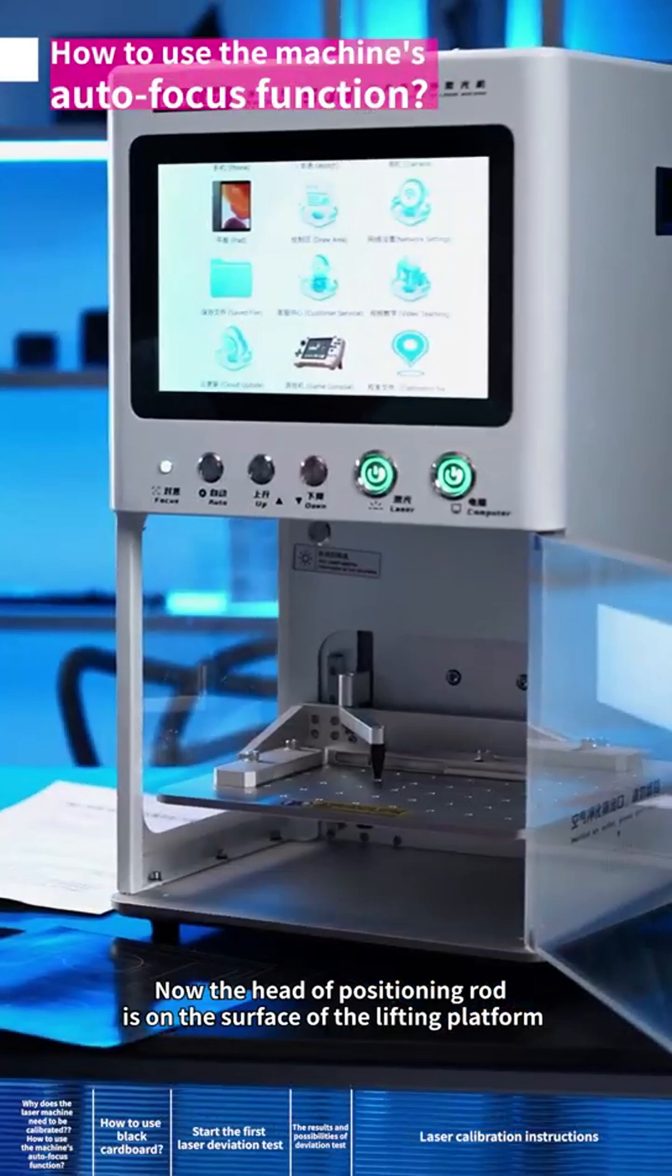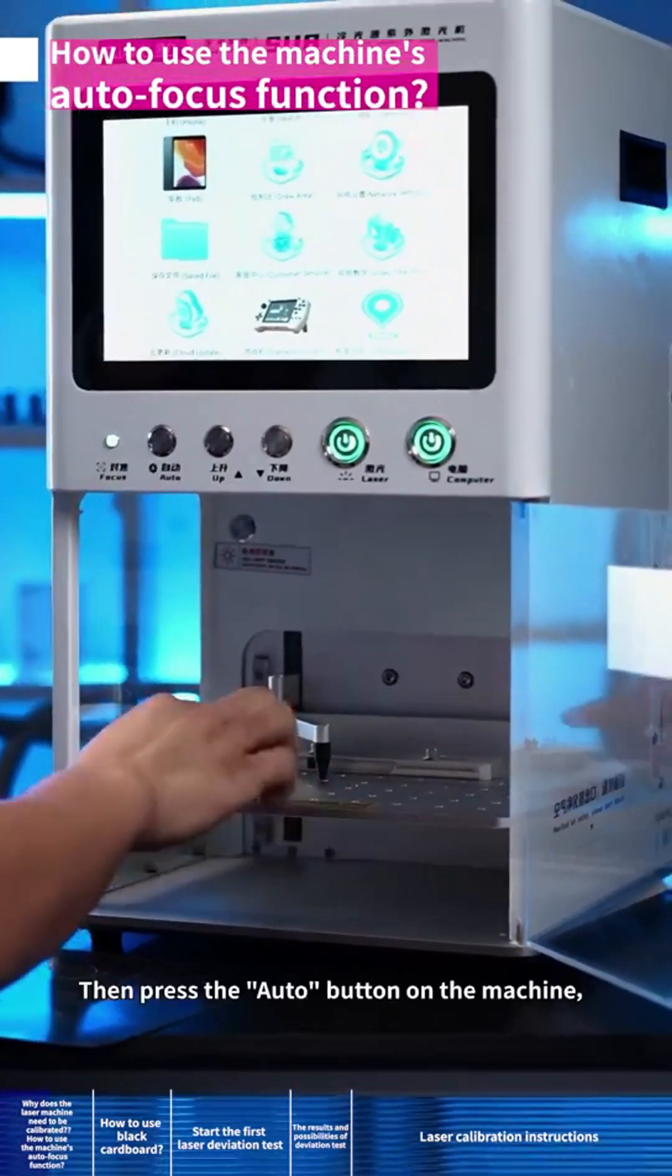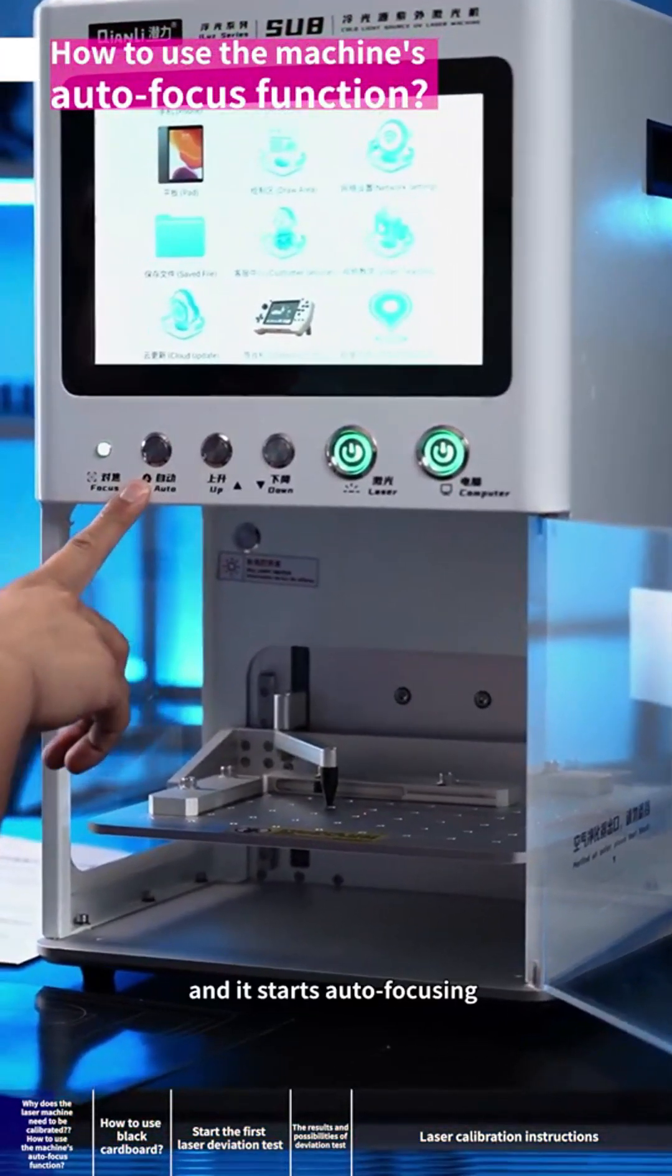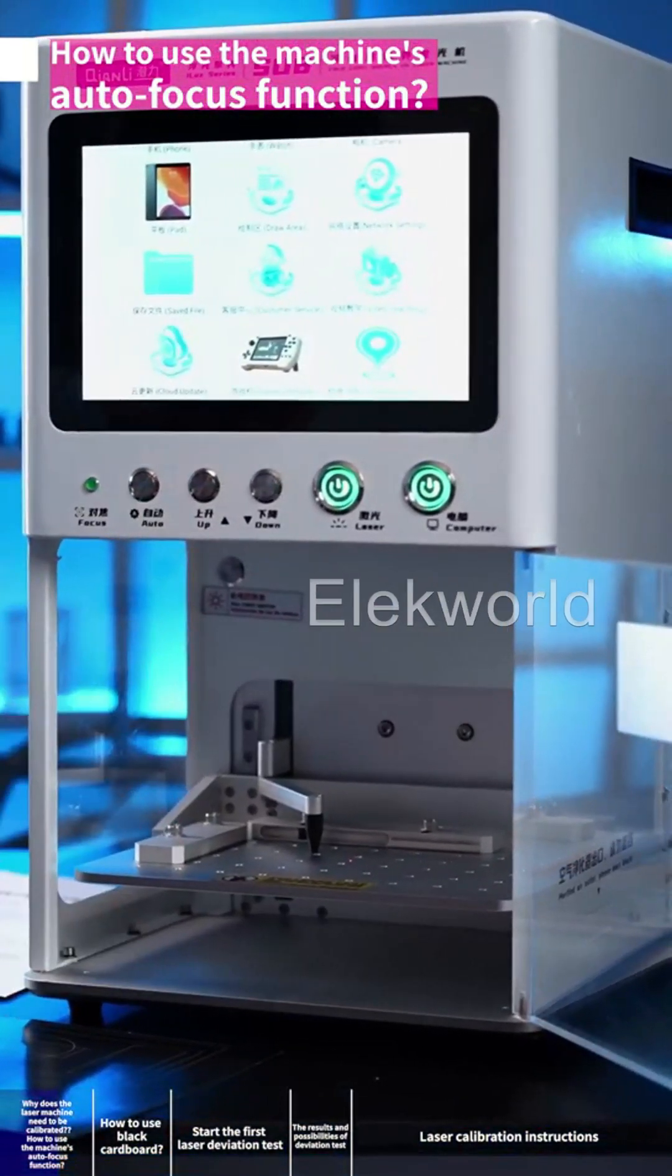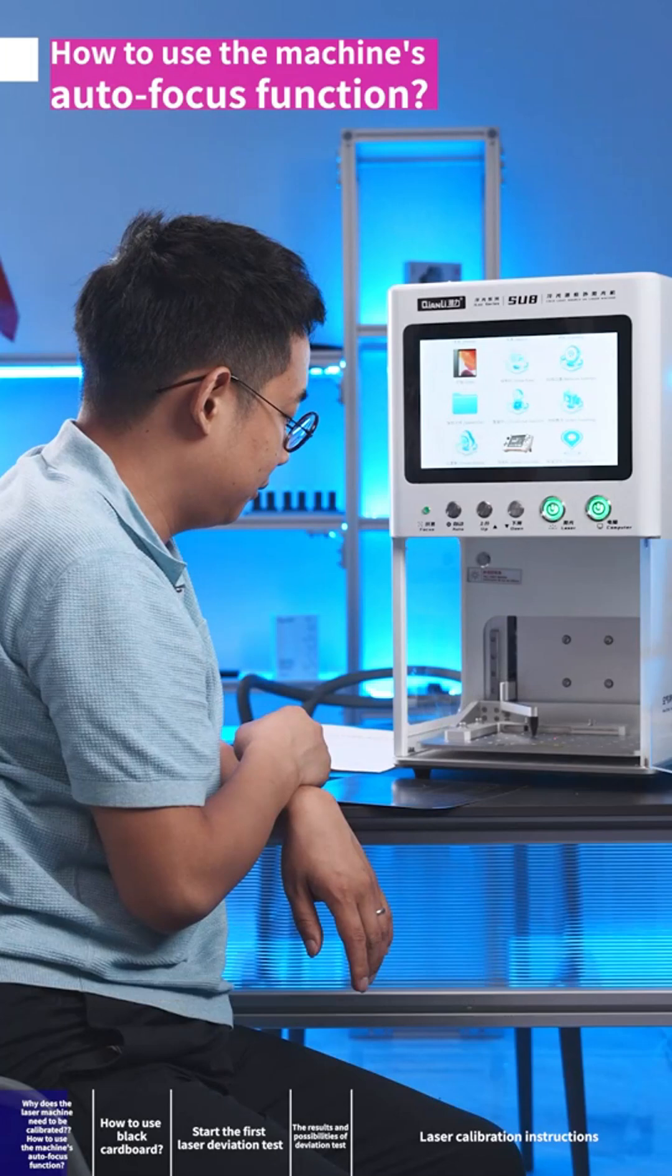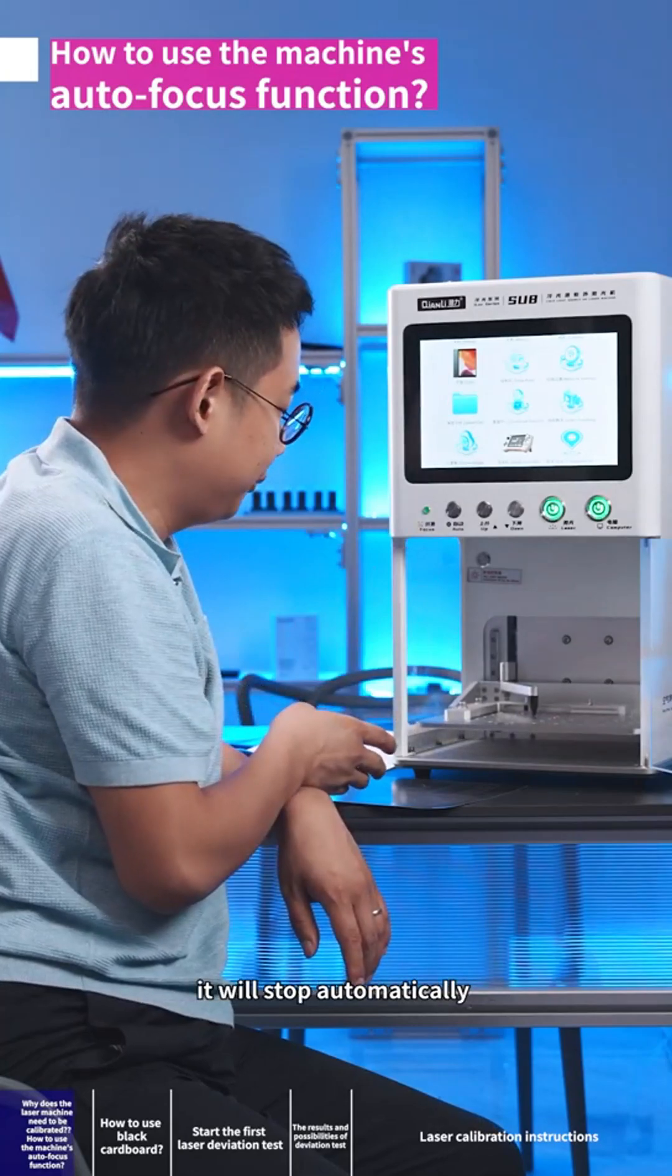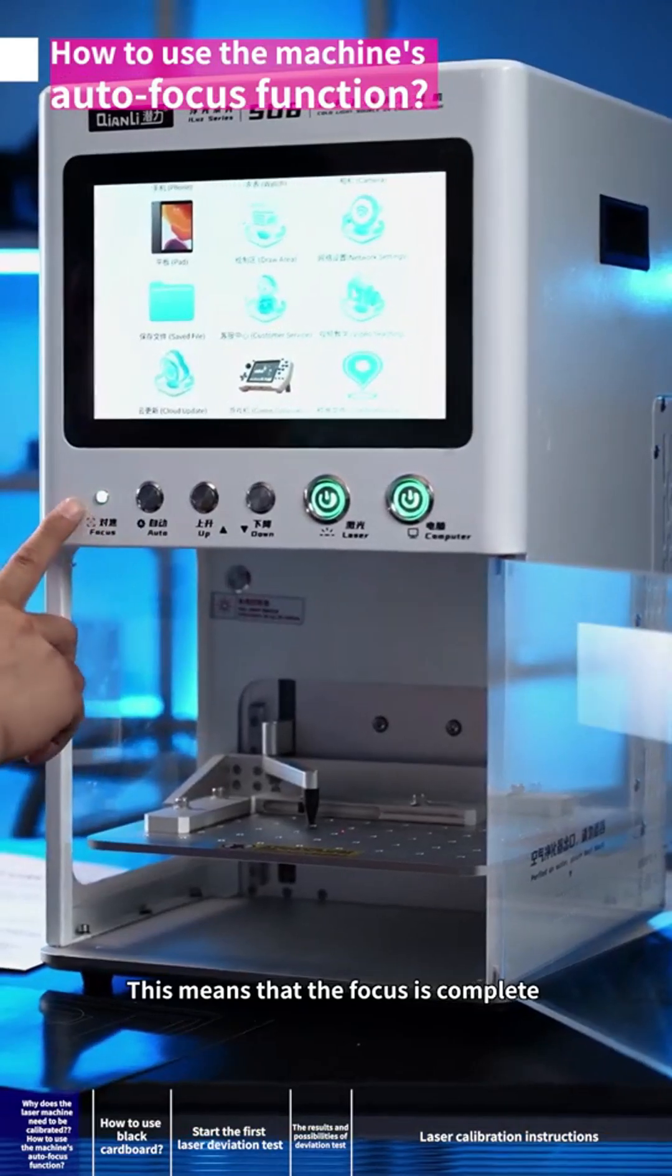Now the head of positioning rod is on the surface of the lifting platform. Then press the auto button on the machine and it starts autofocusing. The lifting platform moves automatically and stops, lifting up and down. When autofocus is completed, it will stop automatically and the focus indicator lights on.